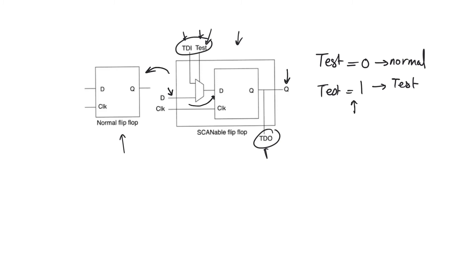On the other hand, with test equal to one, we pick the input TDI and pass it to the input D. And this is not something that you can see here, but we are also going to look at the output TDO.